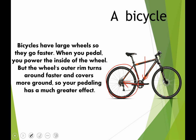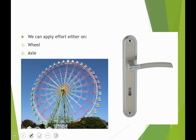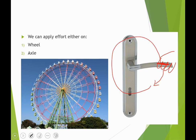When you paddle the bicycle, you are giving the effort on the axle. We can apply the effort either on a wheel or on an axle. In the doorknob, we apply the effort on the handle. The handle acts like a wheel, moving in a circular direction.